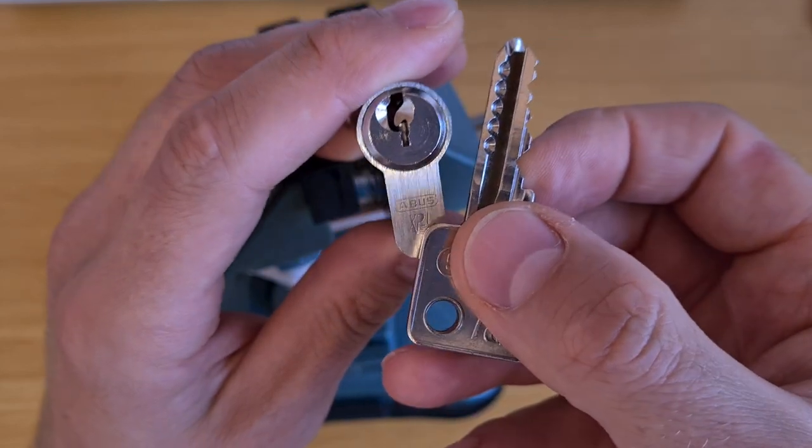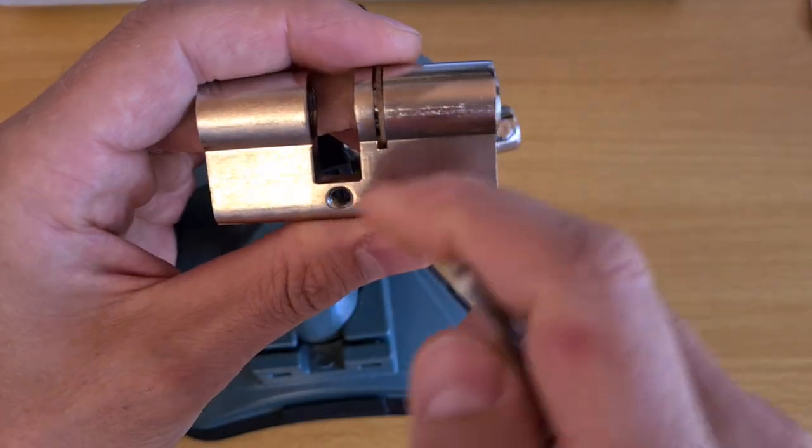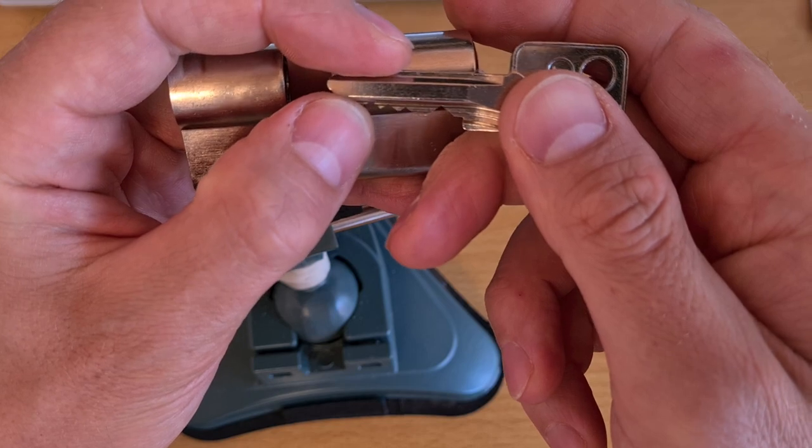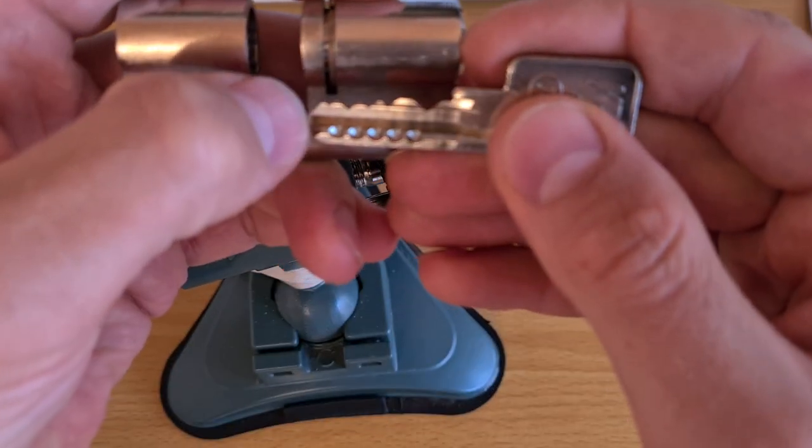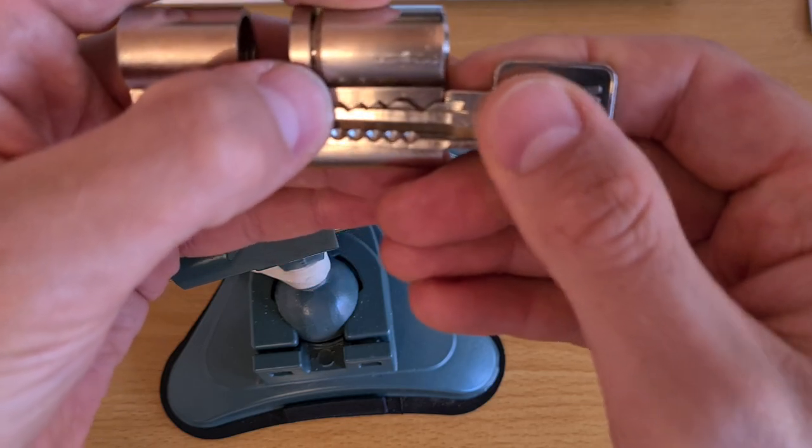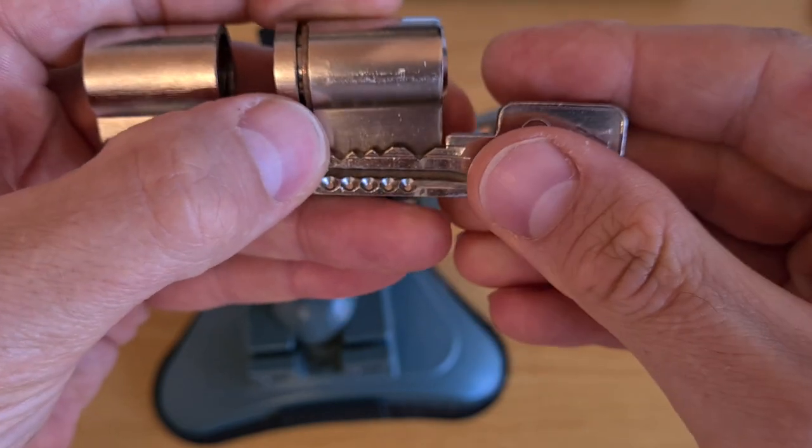This specific one though, it is just five pin because it's a short cylinder, so this first cut pretty much doesn't do anything, so the effective bitting is like this.